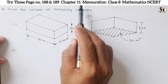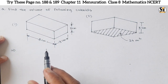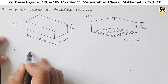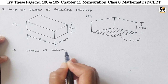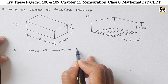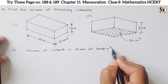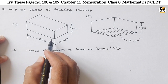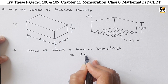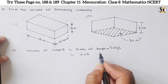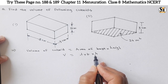The question is: find the volume of the following cuboids. The formula for volume of cuboid is: volume of cuboid = area of base × height. The area of base is l × b, where l is length, b is breadth, and h is height. So the formula is V = l × b × h.